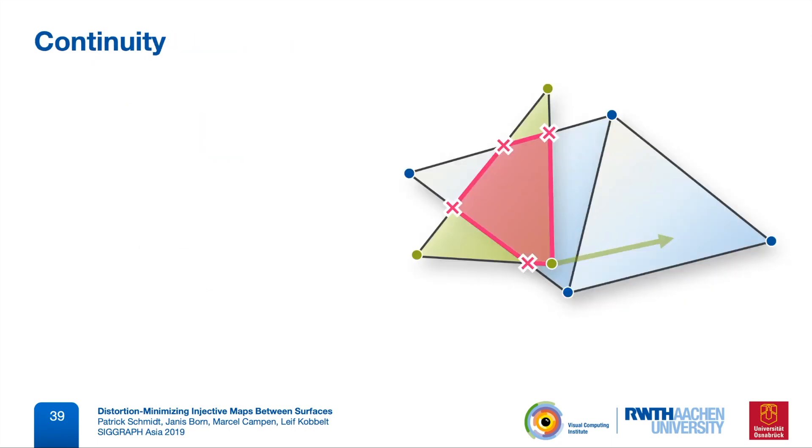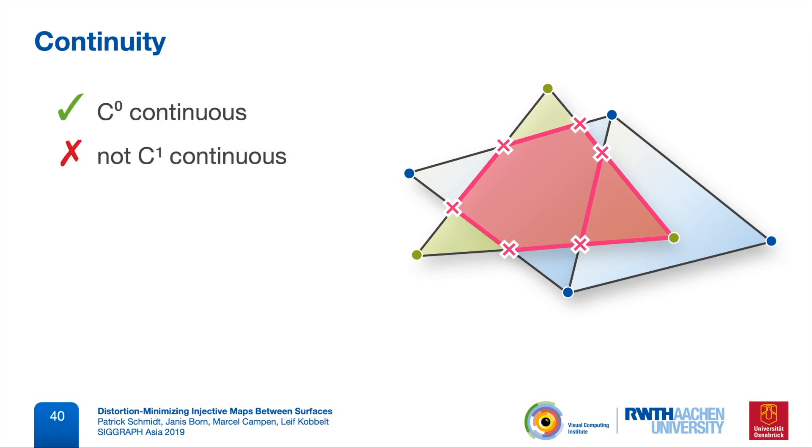Now we are going to add two modifications that really make this algorithm work well in practice. First, let's have a look at the continuity of the objective function. Whenever a vertex of one mesh moves and it crosses an edge of the other mesh, then the set of all overlay polygons changes. And unfortunately, this can cause sudden jumps in both the gradient and the hessian of the objective function. In fact, this function is only C0 continuous. So there cannot be sudden jumps in objective value, but there can be sudden jumps in its derivatives. And in the worst case, this can cause a vertex to oscillate around an edge of the other mesh.